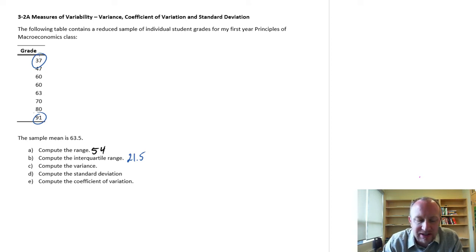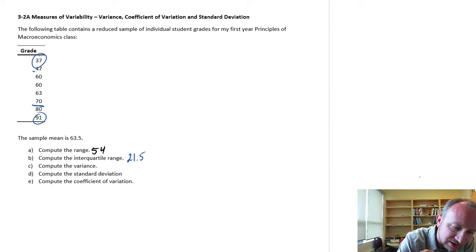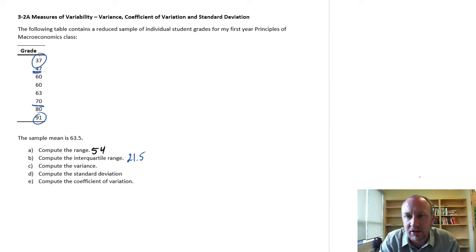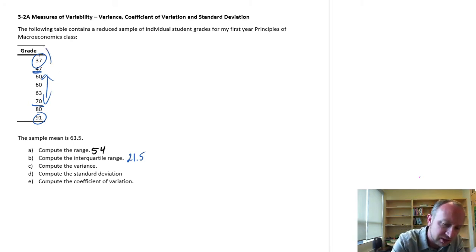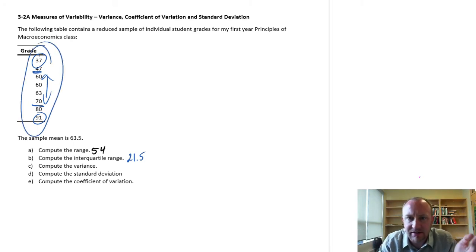When we looked at the interquartile range, we only looked at just these values, the first quartile and the third quartile and the difference between those two. So really uses a very limited amount of the information that is contained within that data set.